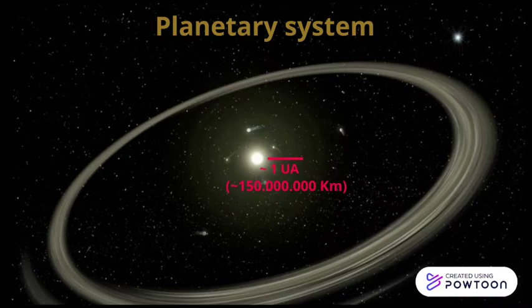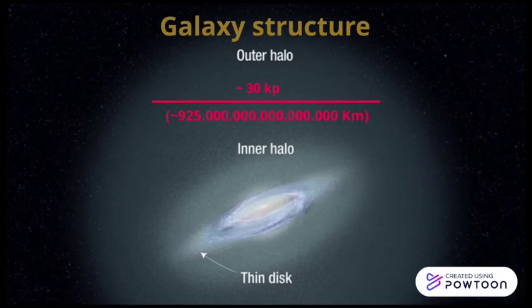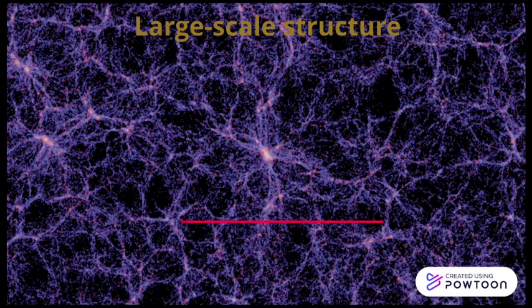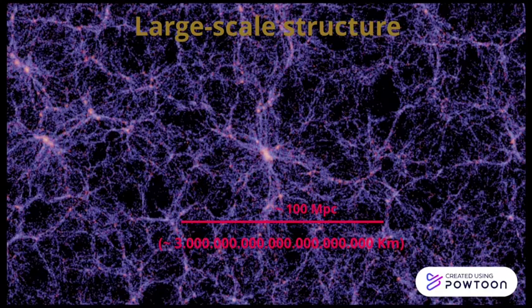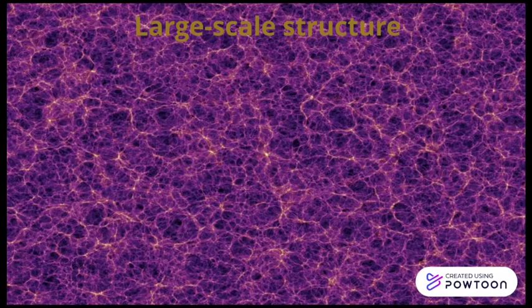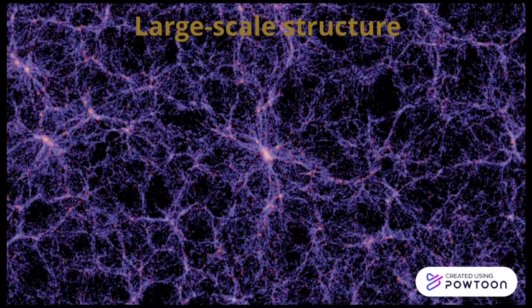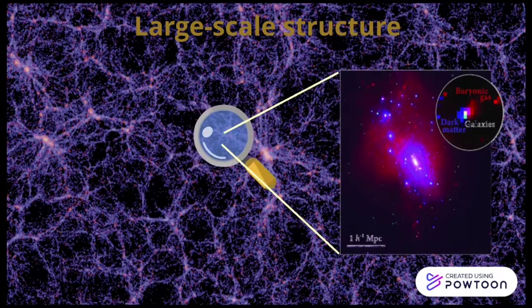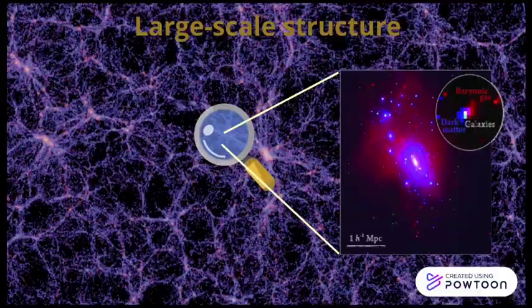As we know, when we take different spatial scales, we observe that the universe forms several structures. When we talk about large-scale astronomy, we are talking about the scale in order of hundreds of megaparsecs. The structure that forms the universe is known as Cosmic Web. If we take larger spatial scales, the universe turns homogeneous and isotropic. For this reason, we can consider that the Cosmic Web is the largest structure in the universe, and it mostly consists of dark matter, baryonic gas and galaxies.